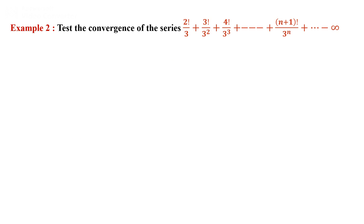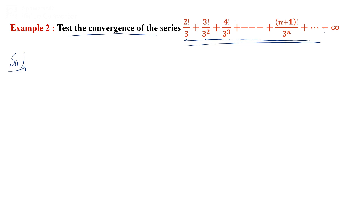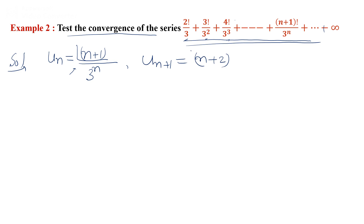Another example: Test the convergence of the series 2!/3 + 3!/3² + 4!/3³ + ... + (n+1)!/3^n + ... The series is completely positive. The nth term is (n+1)!/3^n. The (n+1)th term is obtained by replacing n with n+1, giving (n+2)!/3^(n+1).